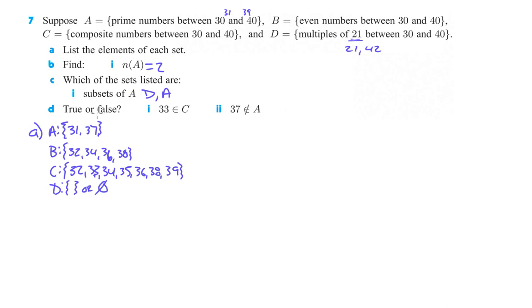And then last one, D, true or false? 33 is an element of C. So there's 33 in the element of C, so that is true. And 37 is not in A. 37 is in A, so this would be false. All right, that's all we have for problems from 2A. If you have any further questions, please feel free to ask. Thanks.